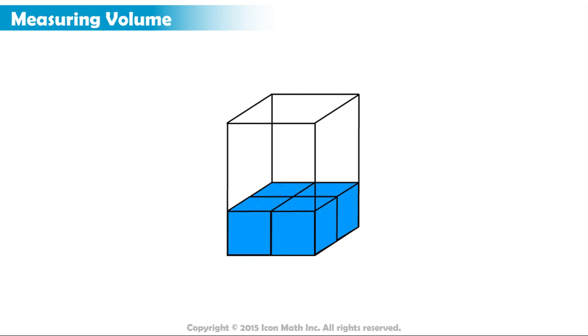We continue filling our rectangular prism. One, two, three, four. It takes another four unit cubes to form the second layer.